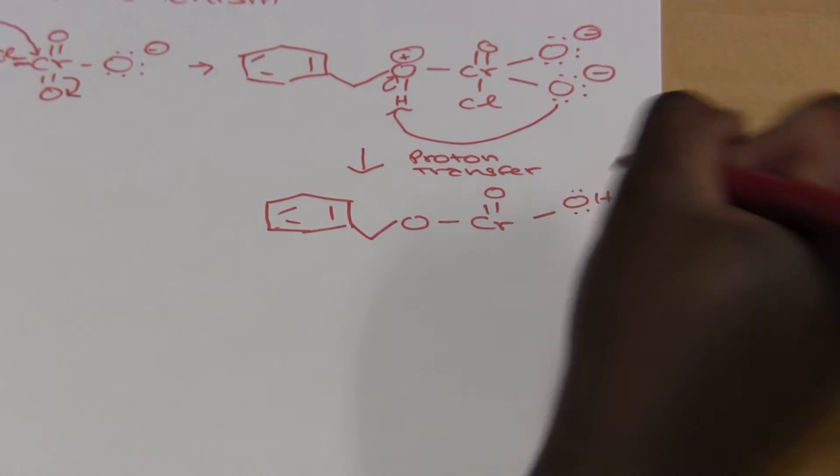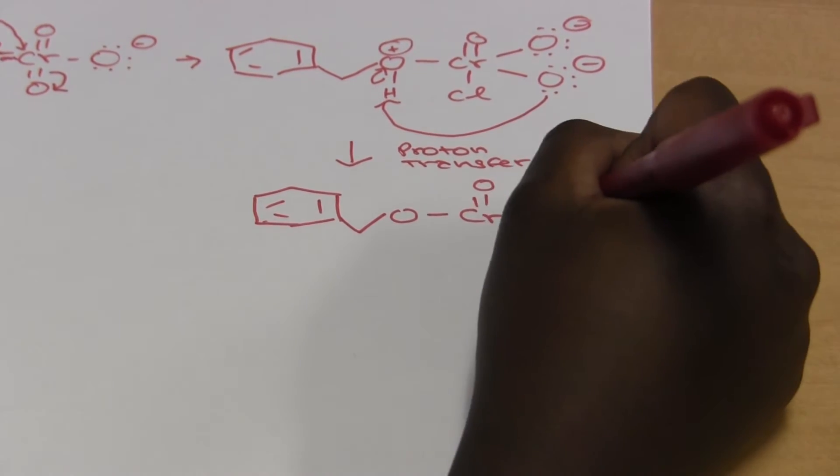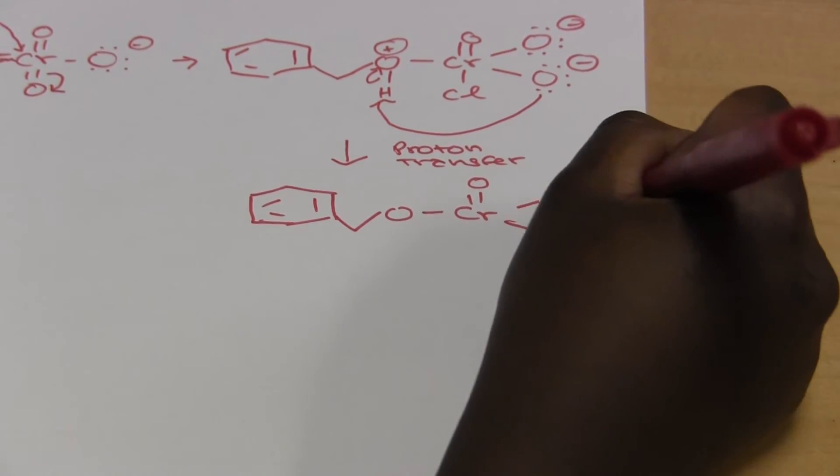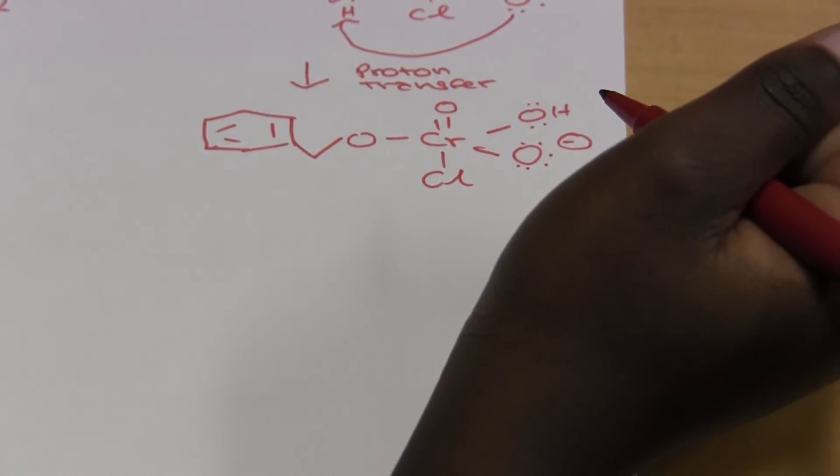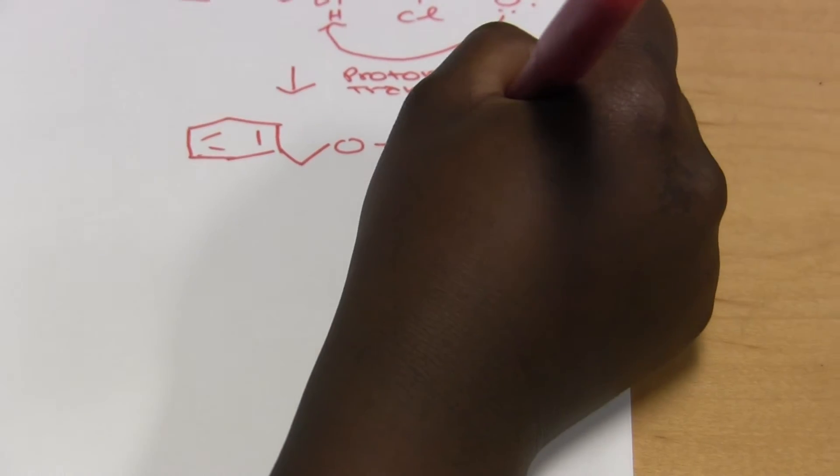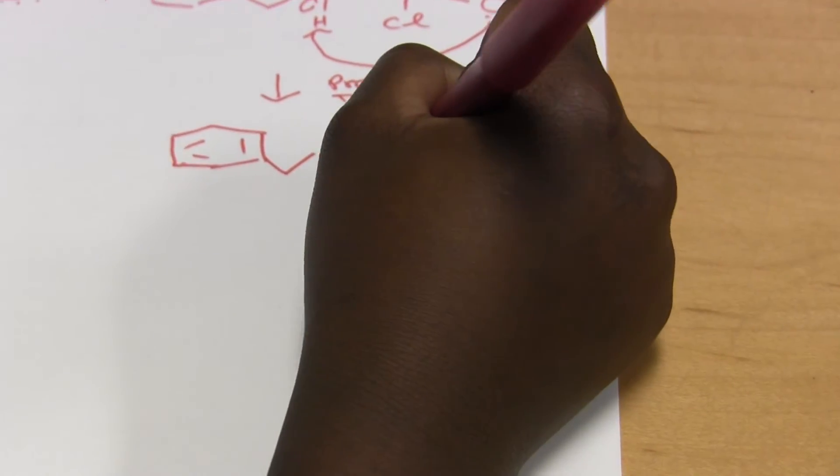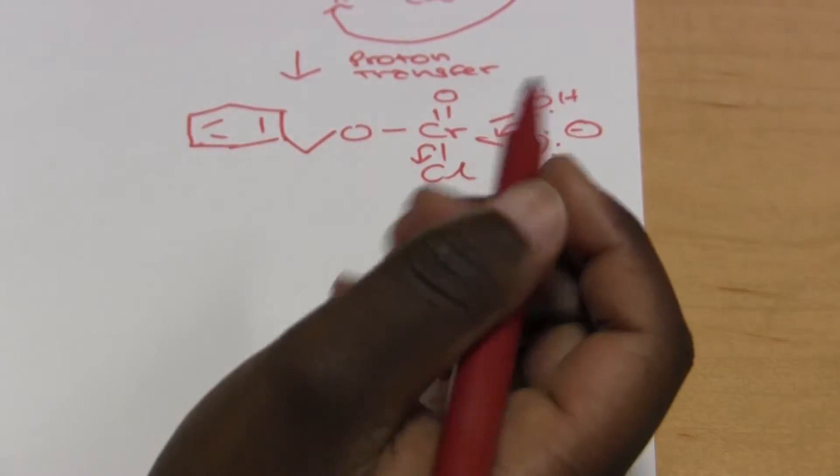And now it's going to be an OH. We still have one O minus and the chloride is still there. This bond is going to flip over here and chlorine will be kicked out.